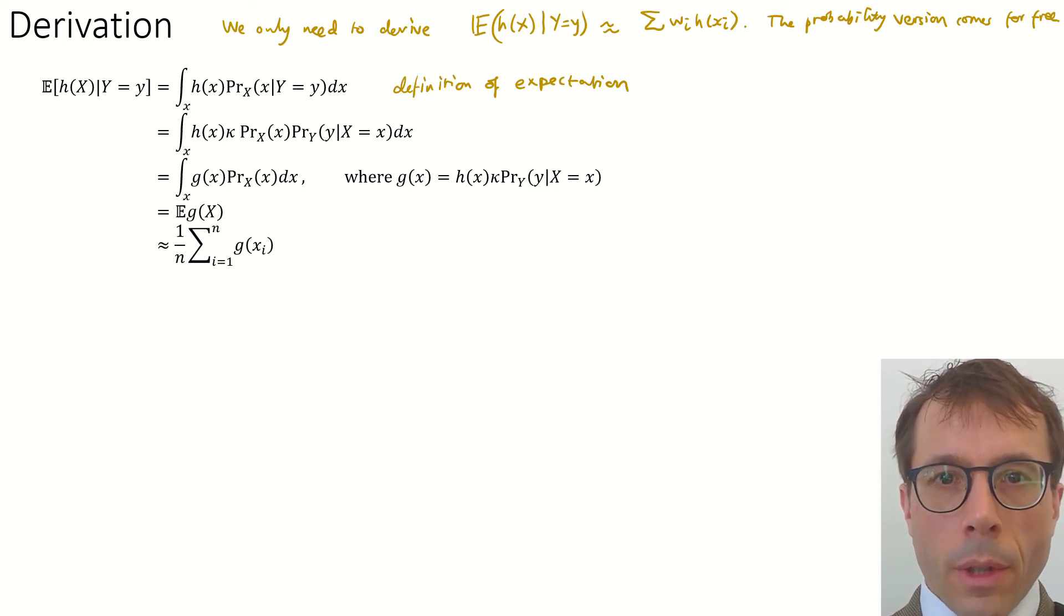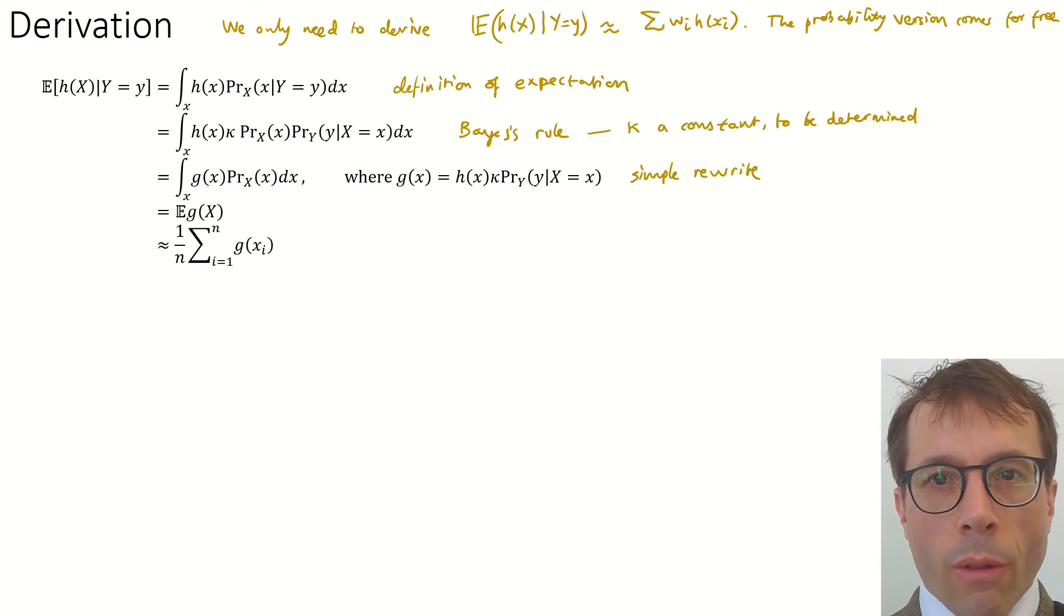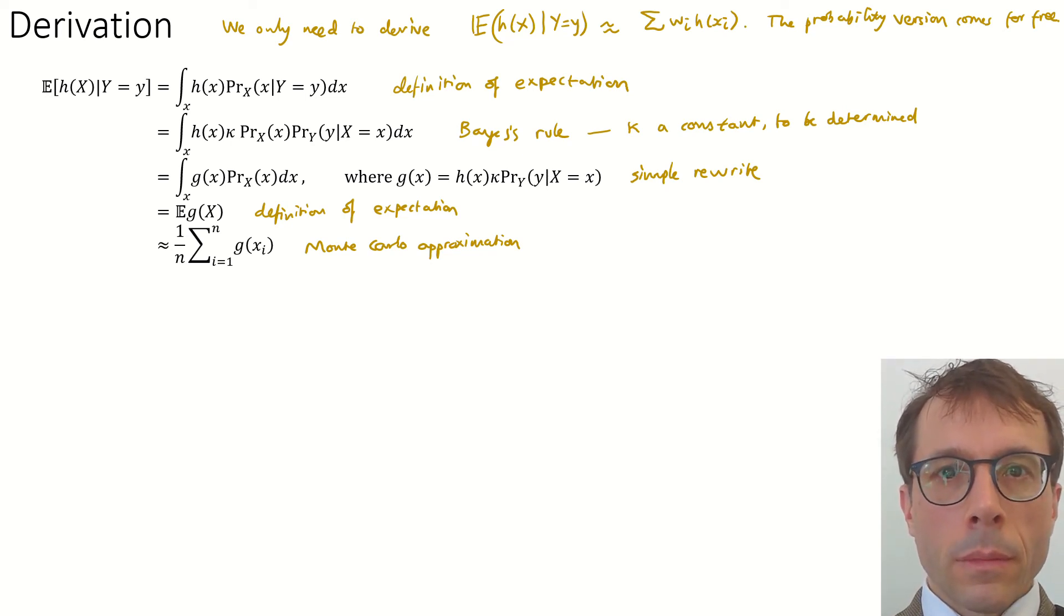Then, I've written it as an integral. This is just the definition of expectation, an integral of the quantity we want times the likelihood for the random variable we're using. Next, I'm using Bayes rule to tell me what this conditional likelihood is. I'm leaving it here with a constant kappa to be determined. Next step is just a simple rewrite. The thing we want to integrate has a term likelihood of x, which I'm going to keep. I'm going to gather everything else into a single function, call it g. So, what we've produced is the integral of g of x times the likelihood of x, which can be rewritten as just the expected value of g of big x. Finally, Monte Carlo tells us that we can approximate it by the average of g of xi, where the xi are a sample drawn from random variable x.